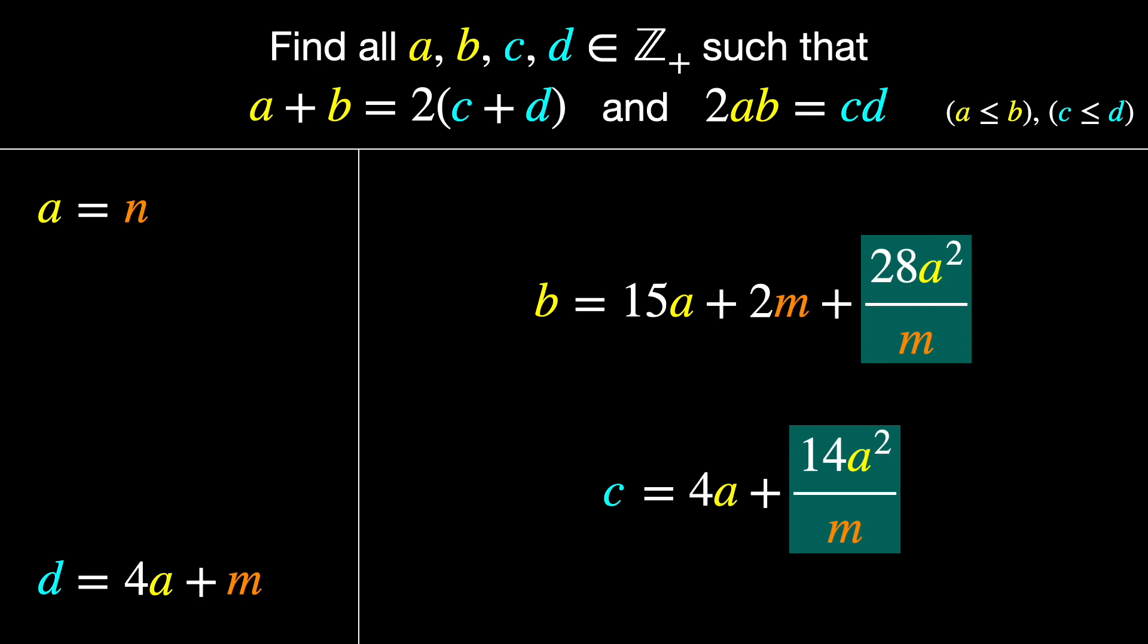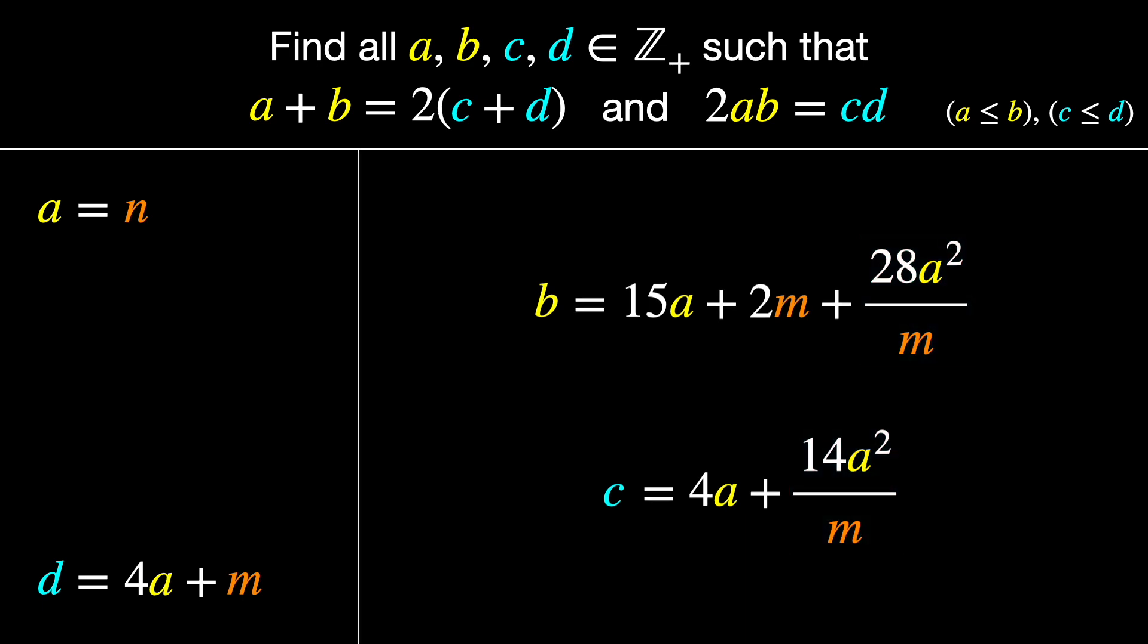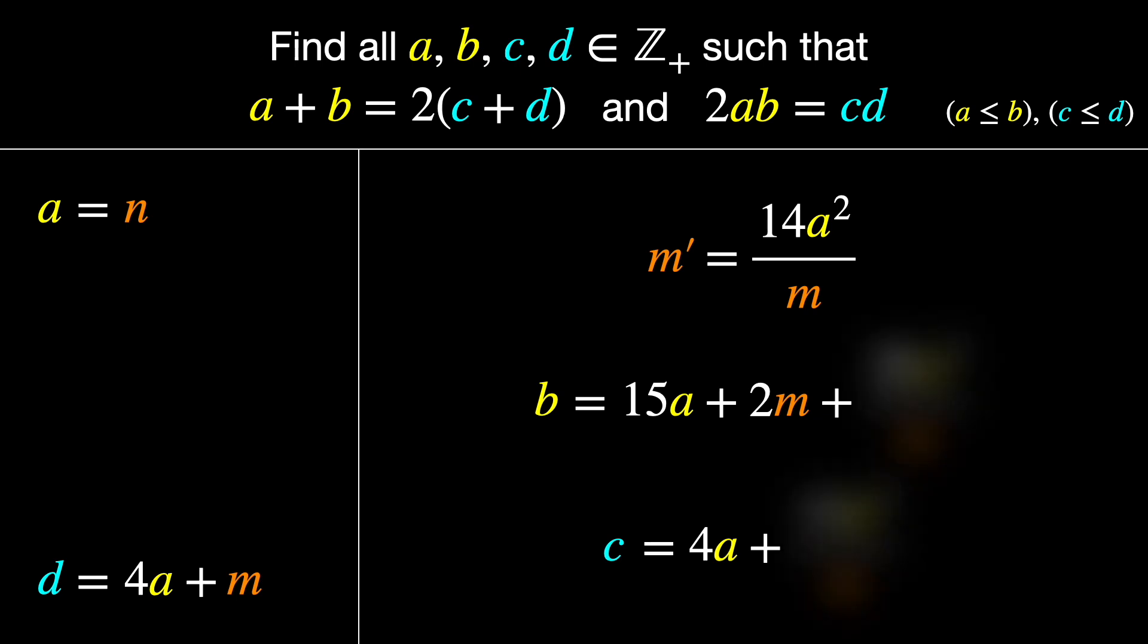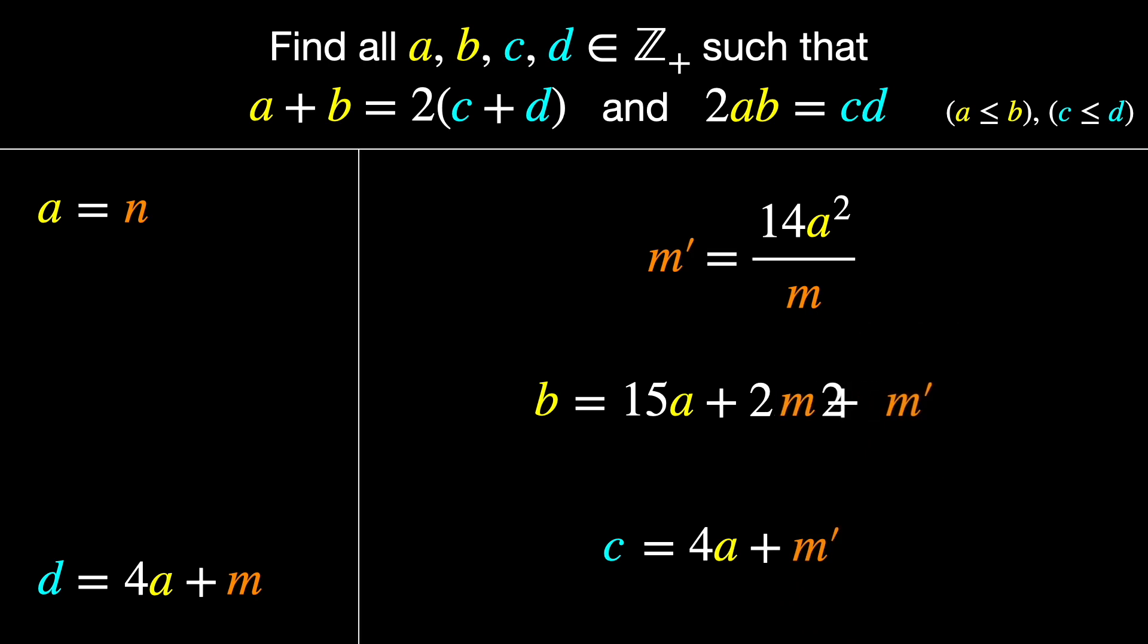Now before we put this all together, we can simplify this a bit. Let's define M prime to be 14A squared over M. Substitute that into these equations, and that looks a bit better. Note that M prime is the other factor that, when multiplied by M, gives you 14A squared. Now we can replace A with N. And with that, we can state the final answer.